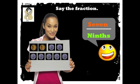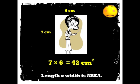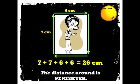Length times width is area. The distance around is perimeter.